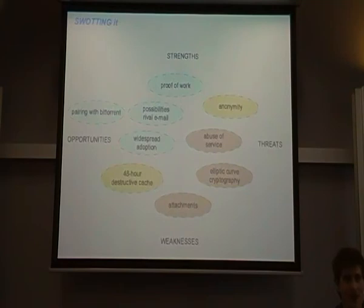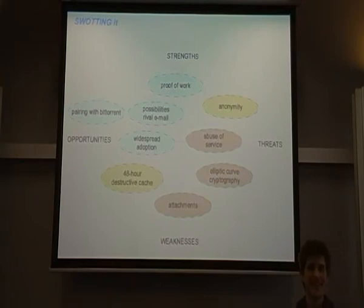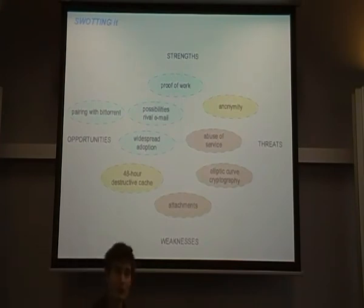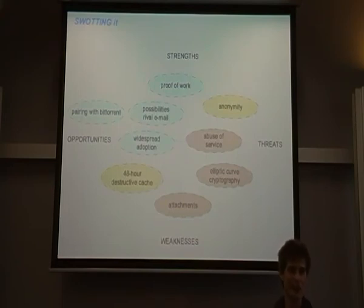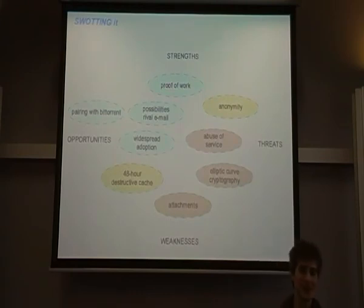Do you know the machine requirements to get the proof of work? Well, in the white paper it says an average machine takes about four minutes to calculate the proof of work - that was an average machine in 2012. So it might not be useful for a Raspberry Pi, for example. I've tried to send messages from an EPC and a very old thin client, and that took well over an hour. So the average PC is not everyone's average PC. You might say that it's not a very green solution in that way.